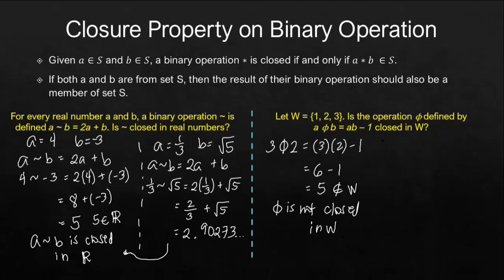Even if we use another pair of values for A and B. Say, for example, we have 1 phi 3. This will result to 1 times 3. Again, we are multiplying the two numbers minus 1. 1 times 3 is 3 minus 1. This is 2.